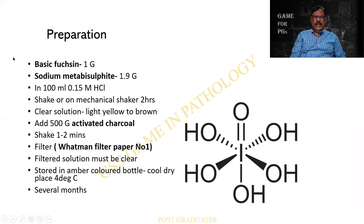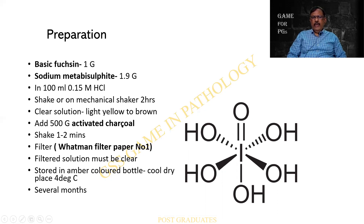How do you prepare this? These are the modes of preparation — I will not be reading it but I would like you to kindly go through it. Basic fuchsin — more important, it should be pronounced as Fuchsin. And sodium metabisulfite. These are the steps you will have to undergo. Activated charcoal is used — it acts more like a filter. Initially you find that the stain will have somewhat a pink colour, but as it is being filtered, it emerges as a colourless reagent.